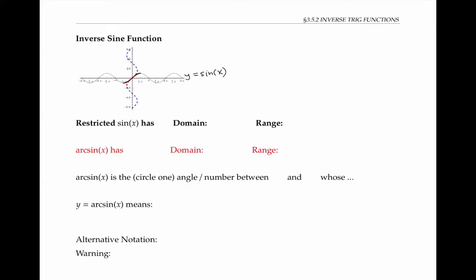The graph of the inverse of a function can be found by flipping the graph of the original function over the line y equals x. I've drawn the flipped graph with this blue dotted line. But you'll notice that the blue dotted line is not the graph of a function, because it violates the vertical line test.